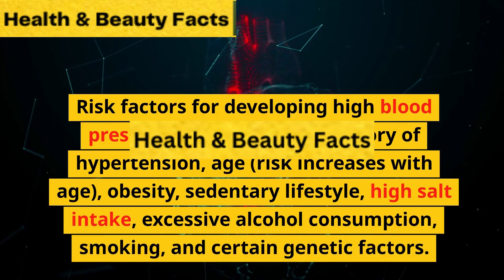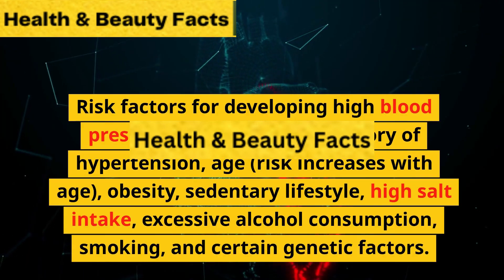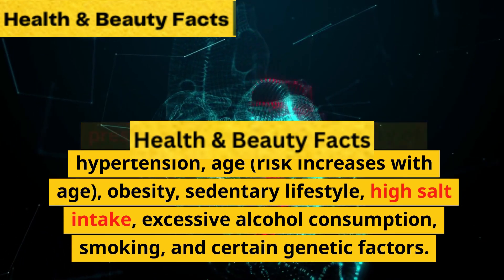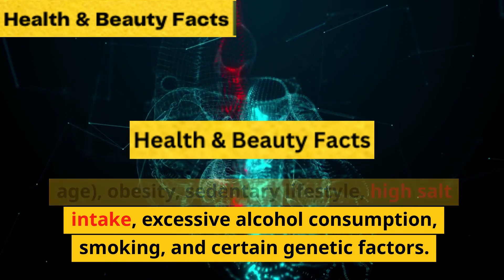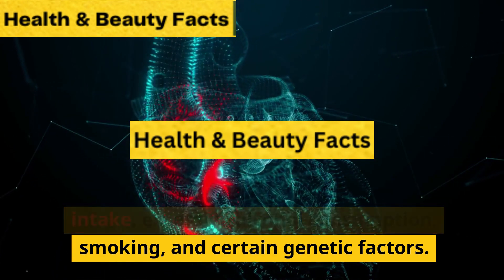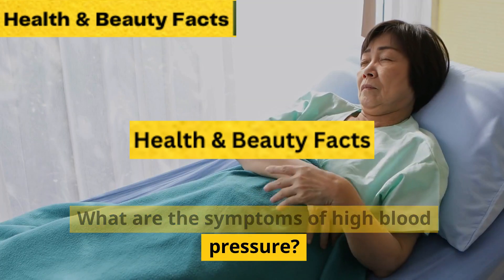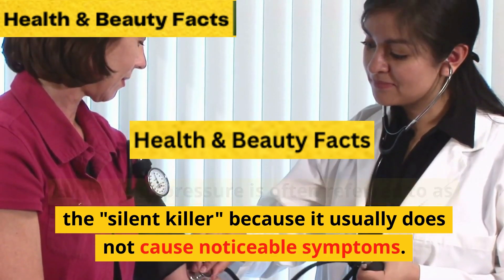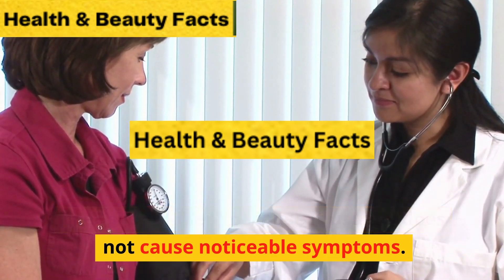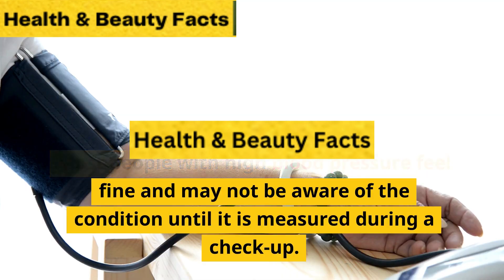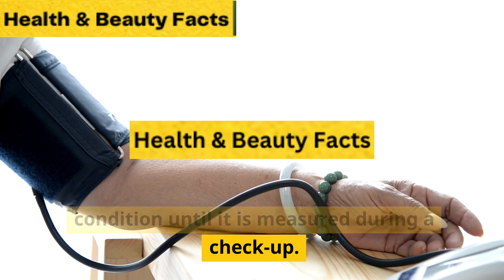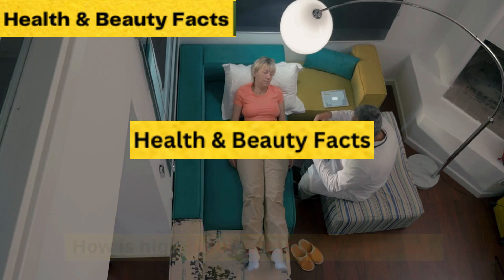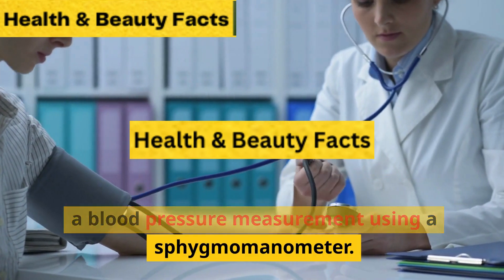What are the risk factors for developing high blood pressure? Risk factors include a family history of hypertension, age, obesity, sedentary lifestyle, high salt intake, excessive alcohol consumption, smoking, and certain genetic factors. What are the symptoms of high blood pressure? High blood pressure is often referred to as the silent killer because it usually does not cause noticeable symptoms, and most people may not be aware of the condition until it is measured during a checkup.